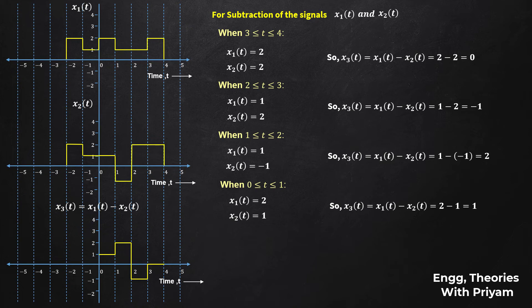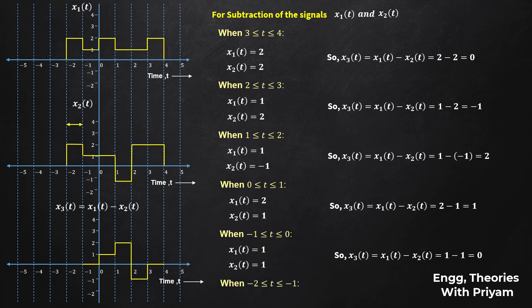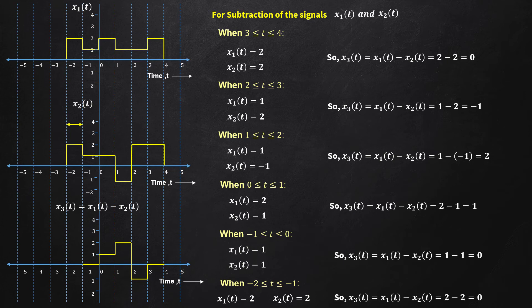When t is in [-1, 0], x1(t) = 1 and x2(t) = 1, so x3(t) = 1 - 1 = 0. Finally, when t is in [-2, -1], x1(t) = 2 and x2(t) = 2, so x3(t) = 2 - 2 = 0.